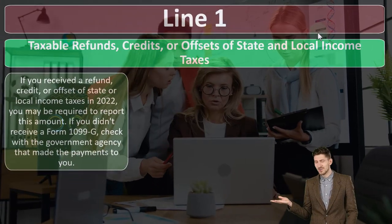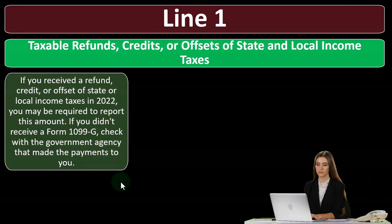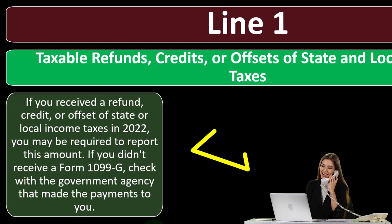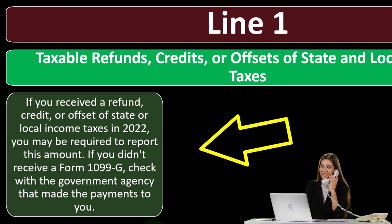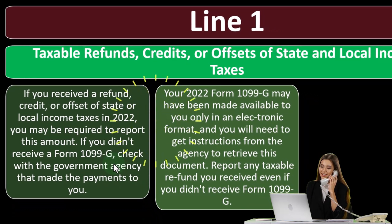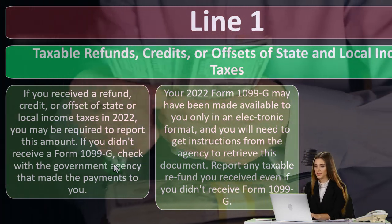Line one: taxable refunds, credits, or offsets of state and local income taxes. If you received a refund, credit, or offset of state or local income taxes in 2022, you may be required to report this amount. If you don't receive a Form 1099-G, check with the government agency that made the payment. The 1099 is the form that usually indicates you have to record something as income — but it's only income if you got a benefit from it in the prior year.